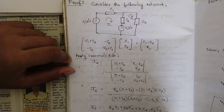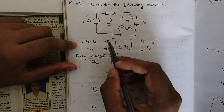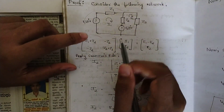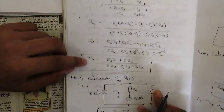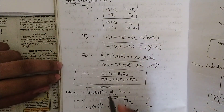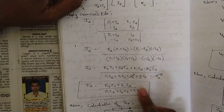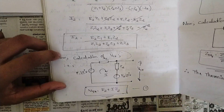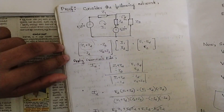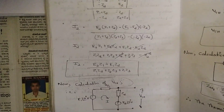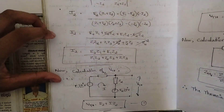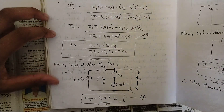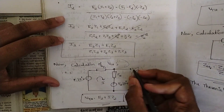By applying Cramer's rule, we write the equations in matrix form: Z1 plus Z2 on the diagonal, and minus Z2 off-diagonal, then Z2 plus Z3. Apply Cramer's rule and solve for I2. You can skip this part and directly start from the calculation of V_th. The actual problem starts with calculating the Thevenin equivalent voltage — consider Z3 as the load impedance.